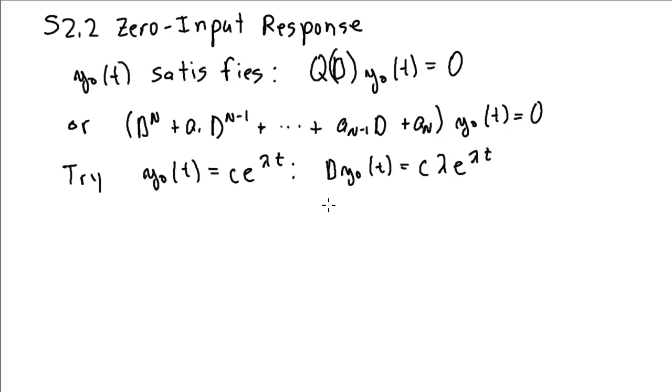And then D squared y zero of t would just be an additional derivative of this. And so we'd have c lambda squared e lambda t. Third derivative would be c lambda cubed, and so on and so forth. And so this differential equation here becomes a polynomial equation in lambda.